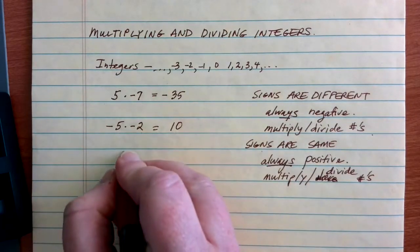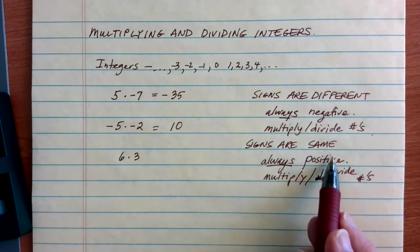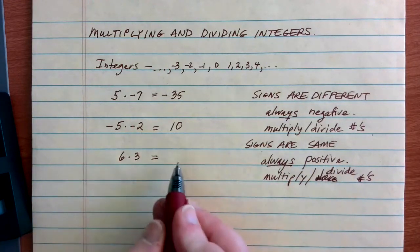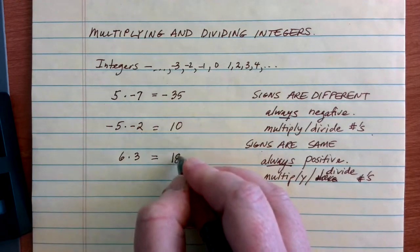Notice these rules work even with things that we already know. Here's 6 times 3, a positive number times a positive number. Because the signs are the same, my answer is positive, just like I have always seen, right? When we've done stuff before, 6 times 3 gives me a positive 18.